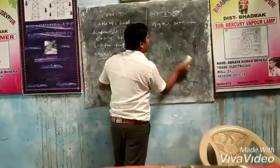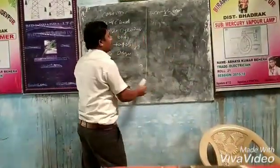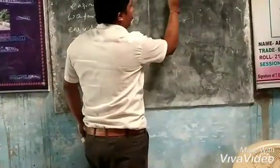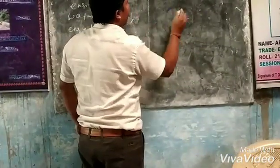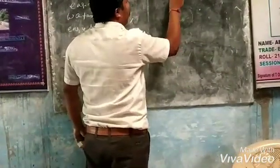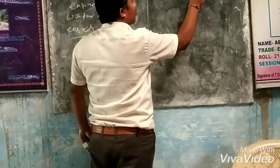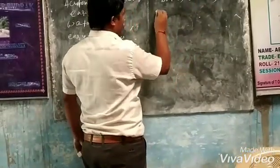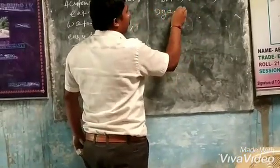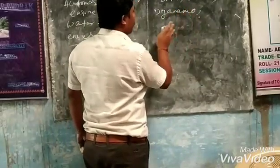Wrought iron is used in making rivets, chains, and hooks.